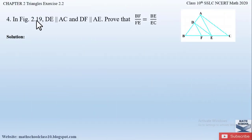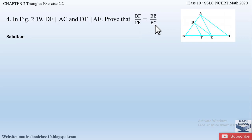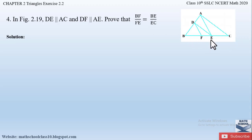Let us begin with question number four from exercise 2.2, chapter 2 triangles. The question says: in the figure, DE is parallel to AC and DF is parallel to AE. Prove that BF/FE is equal to BE/EC.